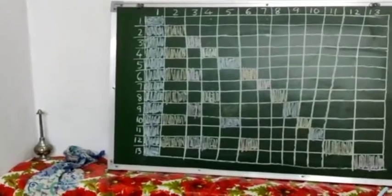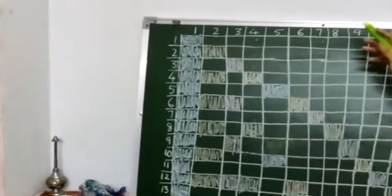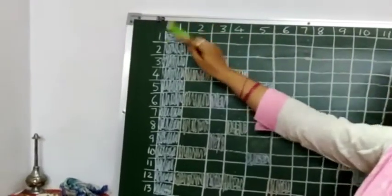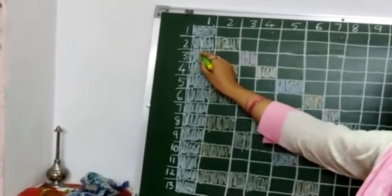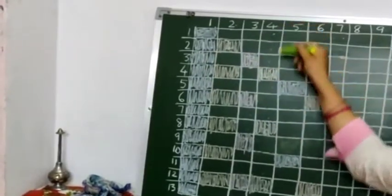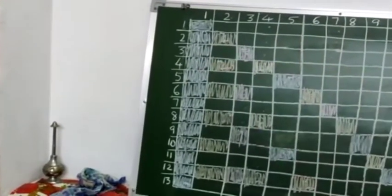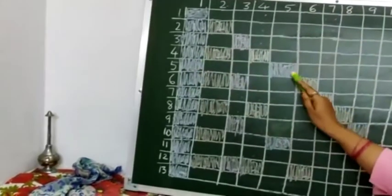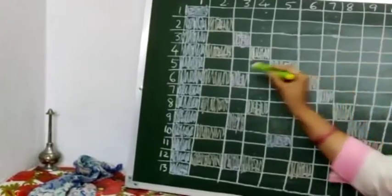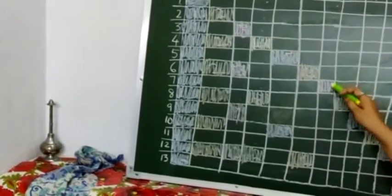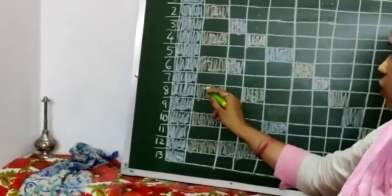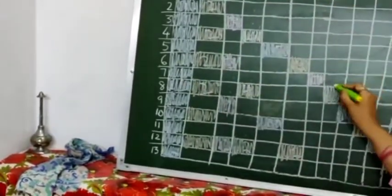And how to get the factors? If we are moving from this side to this side, we will be getting multiples. Factors of two: one and two. Factors of three: one and three. Factors of four: one, two and four. Factors of five: one and five. Factors of six: one, two, three and six. Factors of seven: one and seven. Factors of eight: one, two, four and eight.